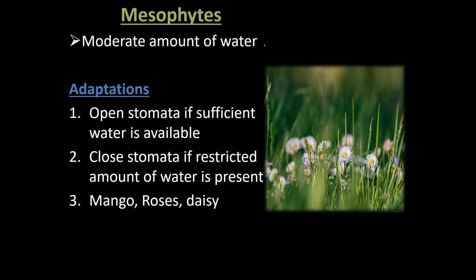Next are mesophytes. Mesophytes are isotonic to their environment, meaning their body's water balance is moderate. If they have an excessive amount of water absorbed, stomata open and transpiration releases water. But if they have a restricted amount of water, stomata close and the transpiration process slows down, reducing water loss. For example, the mango plant.